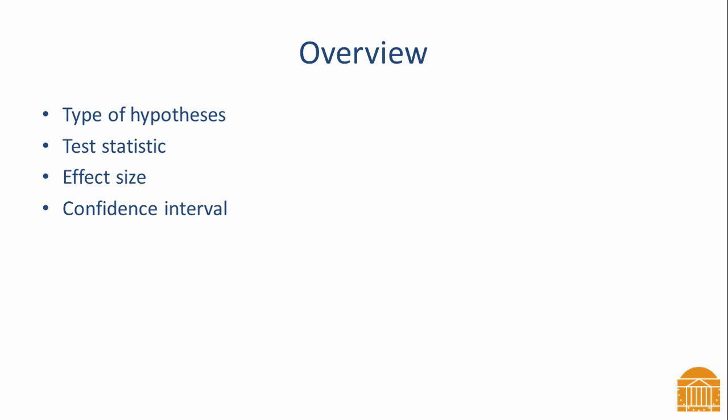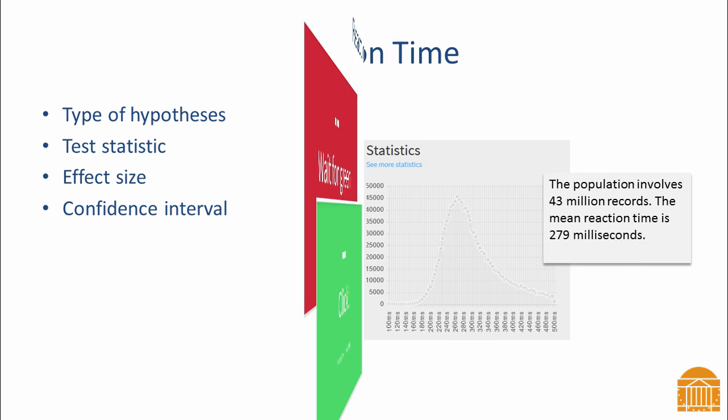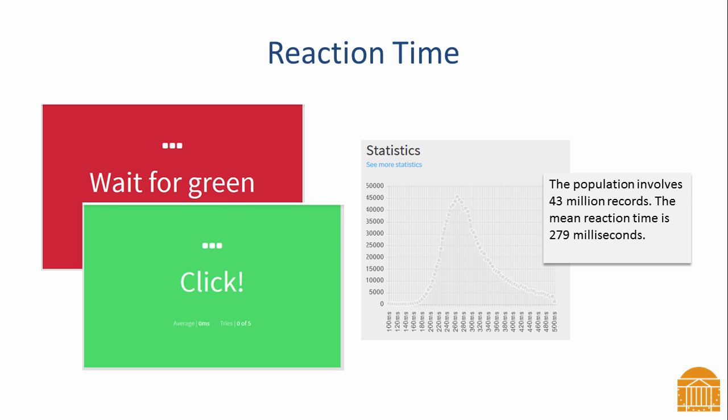We will follow a working example throughout the video to put the t-test into context. The website humanbenchmark.com provides a web-based reaction time test. This test displays a box on the screen. When you start the test, the screen is red for a random length of time. The participant is to click the box as soon as it turns green. Reaction time is the amount of time in milliseconds that elapses between the display of the green square and the mouse click.